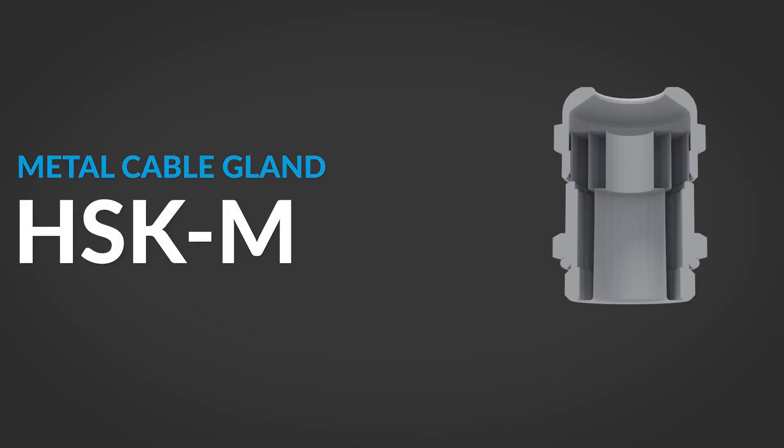Similarly to the HSKK, the HSK-M has a flexible overlapping clamping spline and an IP rating of 68. Moreover, it has an internal sealing edge which results in superior seal between the splined clamping insert and the body and internal splines that prevent the cable from rotating during the installation.